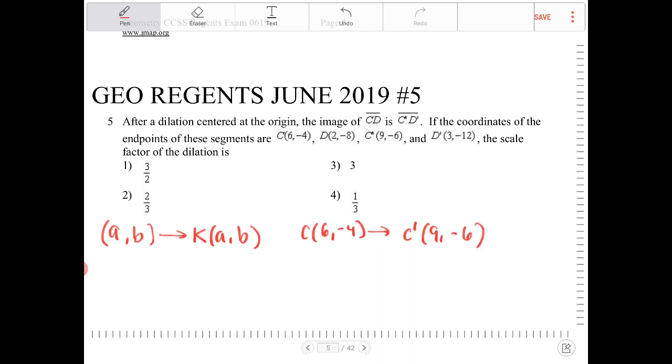what are we doing here? We're actually multiplying 6 by what to get to 9? We're multiplying by 3 halves. How did I get that? I took 9 divided by 6. And we're going to take negative 6 over negative 4. That too is also 3 halves.